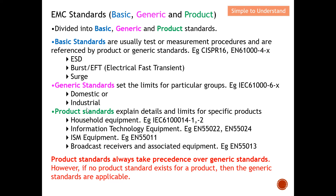The product standard is more detailed and tedious in explaining how to test a specific device. There are many product standards — for example, if it's a household product, you use the household standard; if it belongs to IT equipment, you use the IT standard. For ISM (Industrial, Scientific, and Medical) equipment involving transmission, or broadcast receivers and associated equipment, different EMC standards apply.